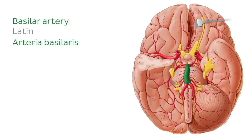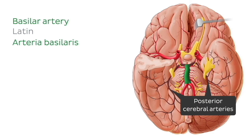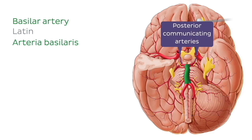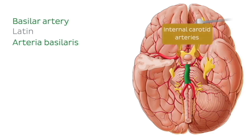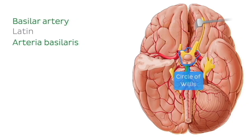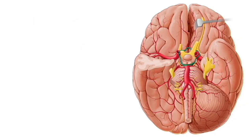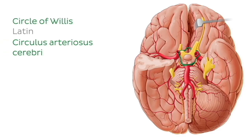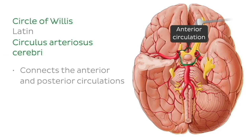The basilar artery ends by bifurcating into the paired posterior cerebral arteries, which in turn join the posterior communicating arteries from the internal carotid arteries to complete the circle of Willis. We can see that this hexagonal arterial network called the circle of Willis connects the dual supply of the brain — the anterior circulation, highlighted here, and the posterior circulation, highlighted in blue.